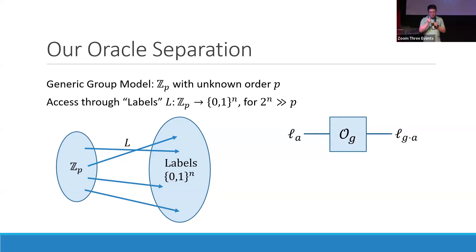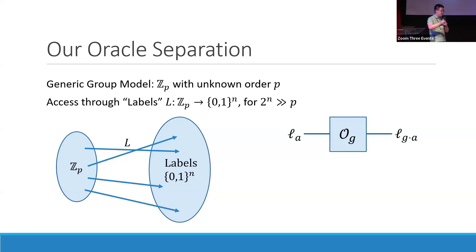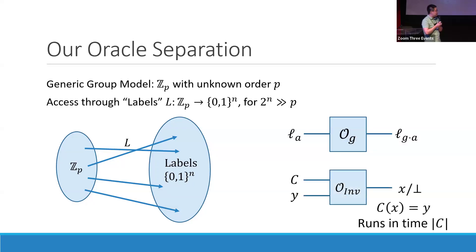The only oracle we give out is a very simple one: it takes as input a label for a group element A, and outputs the label for the group element G times A — essentially it just performs group multiplication by a fixed generator G. As we have seen, in order to give the adversary the power to invert things, just giving out inversion of the oracle is not enough. So we give the adversary a much more powerful inversion oracle that takes an arbitrary binary circuit and a desired output Y, and inverts the circuit for the adversary.